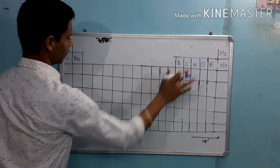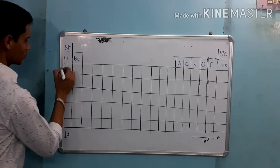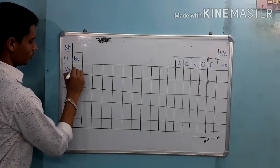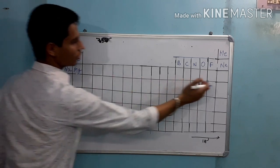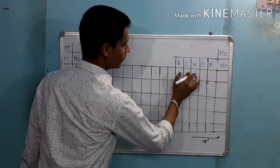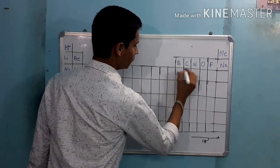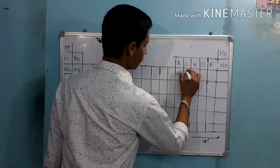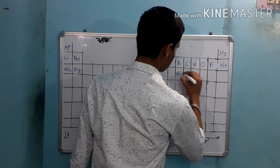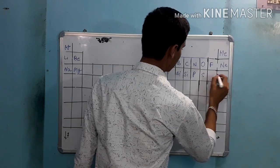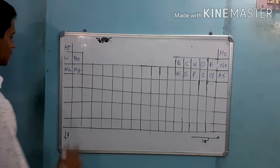I am going to start with sodium, then magnesium, aluminum, silicon, phosphorous, sulfur, fluorine, argon — let's go through the extract.